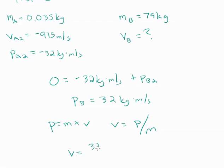So 32 kilograms meters per second divided by 79 kilograms. So after firing his thrusters, the astronaut, who has a much greater mass than the gas, is going to be moving much more slowly to have the same momentum, 0.41 meters per second.